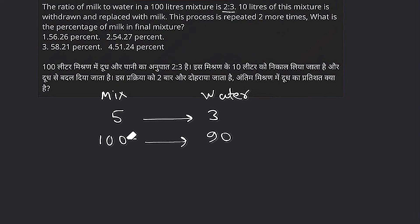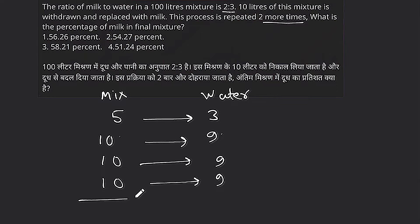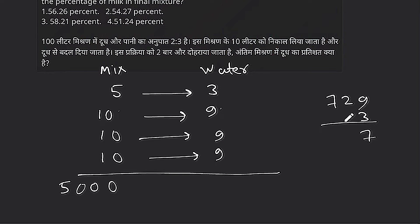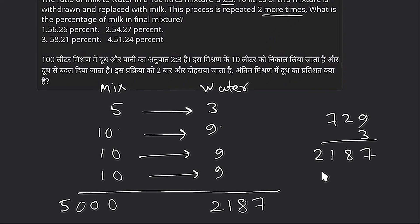The ratio becomes 10 is to 9. This process is repeated two more times — the mixture of 10:9, then repeat the mixture of 10:9, and then repeat the mixture of 10:9. Here we have been asked: what is the percentage of milk in the final mixture?